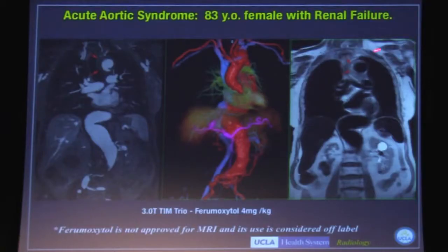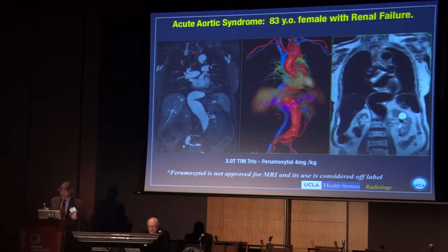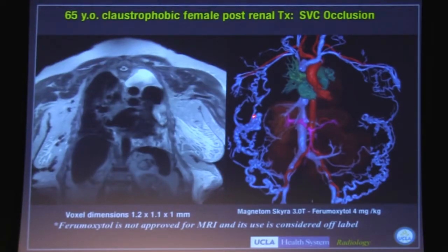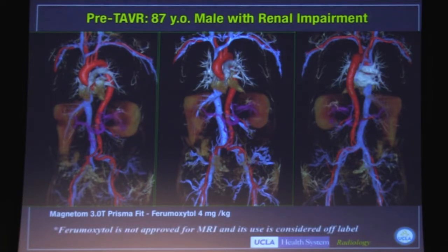Here we can see intramural hemorrhage in the aortic arch, as well as a huge complex aneurysm of which we can see every nook and cranny. This would be very difficult to image even with modern CT, because this would enhance very slowly — timing would be difficult. Here's a patient, also claustrophobic, with SVC obstruction and one or two collateral veins. Based on this Feraheme venogram, she had successful intervention in the SVC — the whole thing done in about 10 minutes. Similarly, patients with renal impairment prior to TAVR, where you don't want additional CT contrast, can do beautifully with ferumoxytol to define arterial access and pretty much everything else.